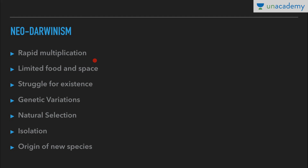Neo-Darwinism has the following features. First, rapid multiplication — all organisms multiply in geometrical ratio while food and space are limited, developing in arithmetic progression. This causes struggle for existence, which is of three types: intraspecific, interspecific, and environmental. Then there are genetic variations — inheritable variations occurring due to a variety of reasons, involving mutation and population genetics as explained by the Hardy-Weinberg law.